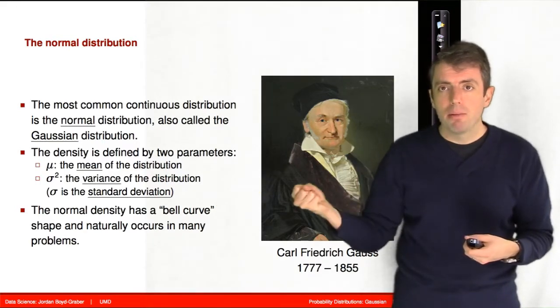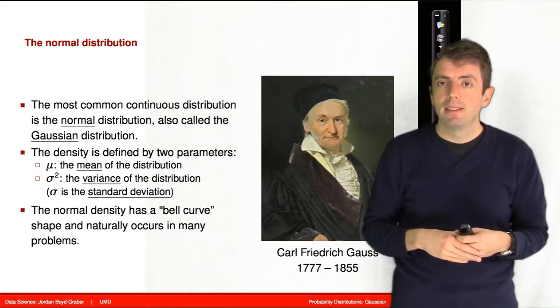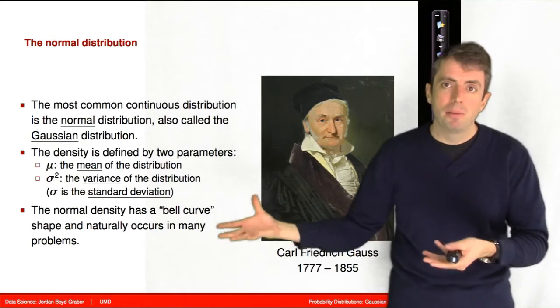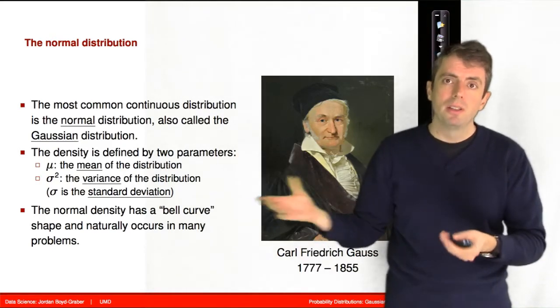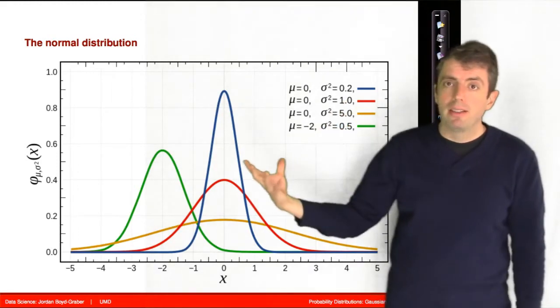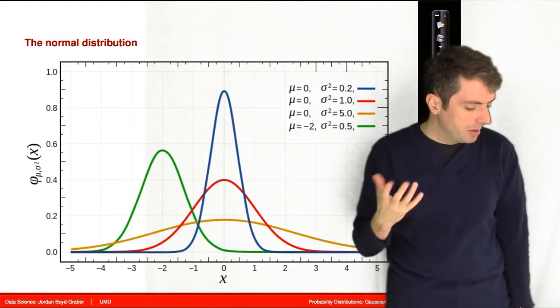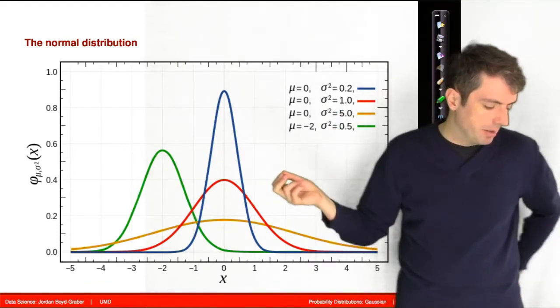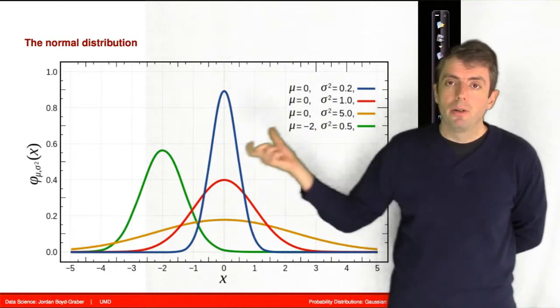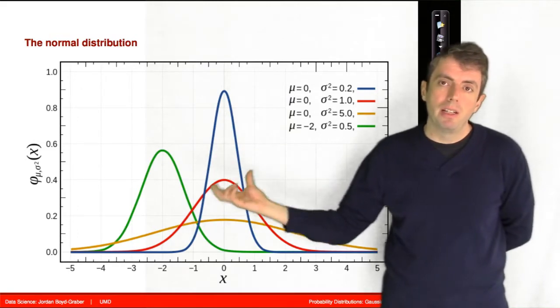That is, it has high probability around the mean and then it tapers out to the sides. If you've seen any sort of distribution, it's probably this normal distribution. So here are examples of what a Gaussian distribution looks like for various parameter settings. In blue, you have a mean of zero and a very small variance, and so this means that most of your values are very close to the mean of zero.